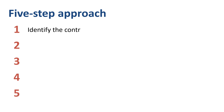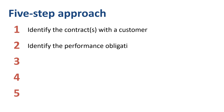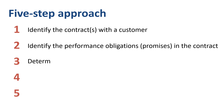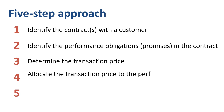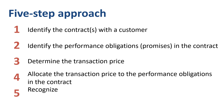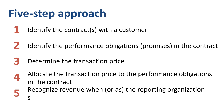Step 1: Identify the contract or contracts with the customer. Step 2: Identify the performance obligations in the contract — in other words, the promises to deliver goods or provide a service. Step 3: Determine the transaction price. Step 4: Link step 2 and step 3 by allocating the transaction price to the performance obligations. Step 5: Recognize revenue when or as a performance obligation is satisfied. A performance obligation may be satisfied at a point in time, typically for promises to transfer goods to a customer, or over time, typically for promises to transfer services to a customer.